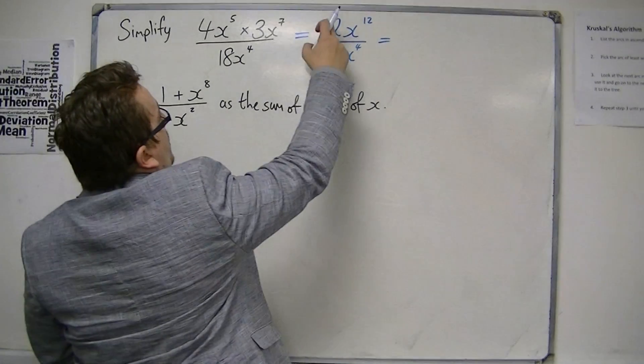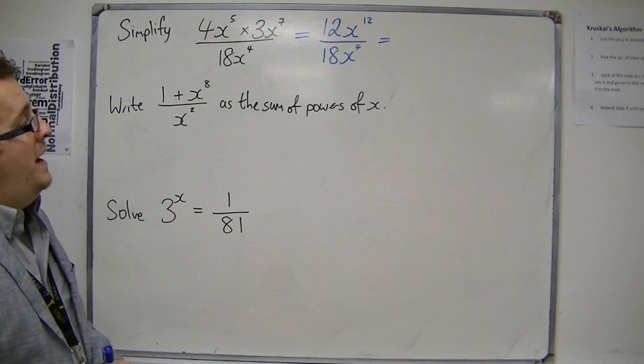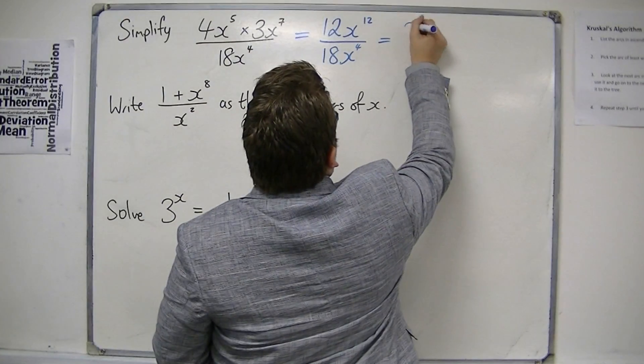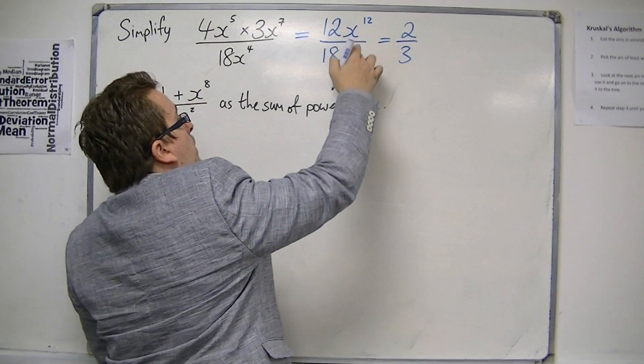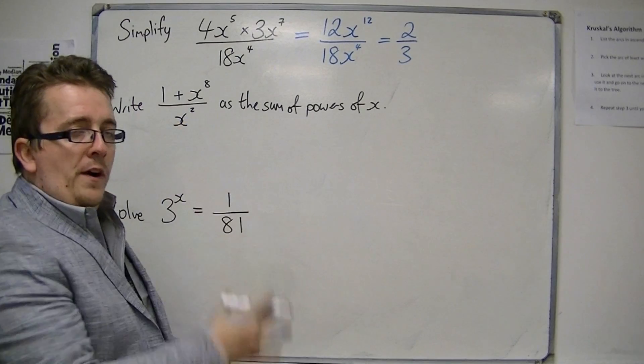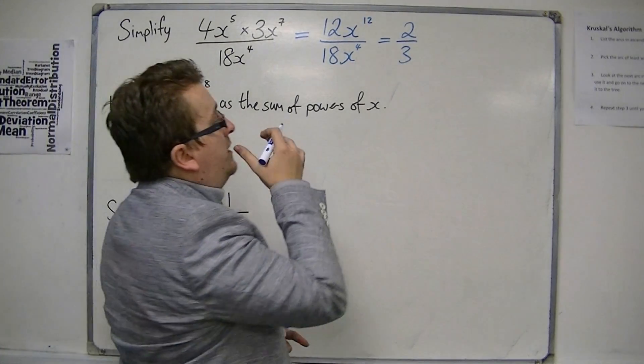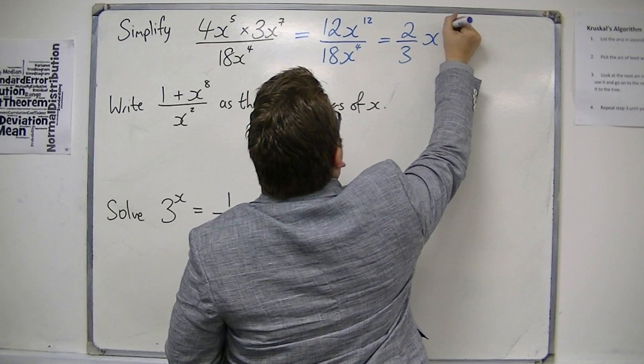Now deal with the fraction, the 12 over 18. 12 over 18 is 2 thirds, so I can write that as 2 thirds. And then you have x to the 12 divided by x to the 4. And when you divide, you subtract the indices. So this is x to the 12 take away 4, which is just 8.